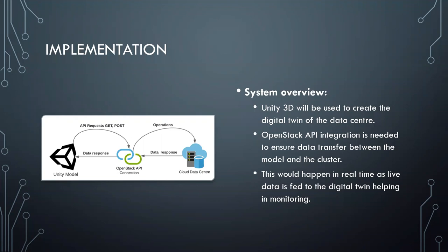Our OpenStack API integration is needed to ensure data transfer between the model and the cluster. This happens in real time as live data is fed to the digital twin. The 3D model in Unity has GET and POST requests from the OpenStack API, which gets data from the data center. We get data by requesting it from the OpenStack API, and we can also post data that would actually manipulate the VMs and the hypervisors in the cloud data center.